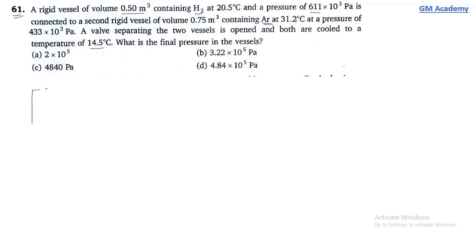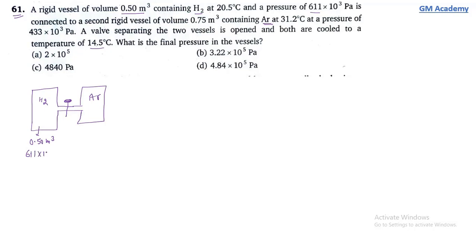Initially, one vessel is connected to another vessel via a narrow tube with a stopping cork. Here we have hydrogen and argon. The first vessel has parameters: volume 0.50 meter cube, pressure 611 × 10³ Pascal, temperature 20.5 degree centigrade.